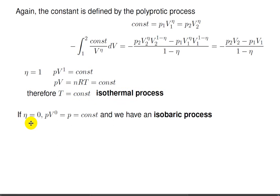If we let eta equals 0, then pressure times V to the 0 is just equal to the pressure, which is a constant, and that's the definition of an isobaric process.